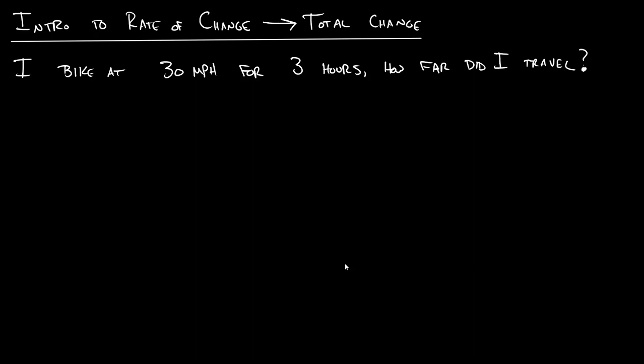But let's look at this simple example to see what I'm getting at. So we have this problem where I'm biking at 30 miles an hour for three hours and we want to know how far did I travel. And so what's actually important about this problem? This is a problem that we can do without any calculus, right? But how can we interpret some of these ideas in calculus terms?